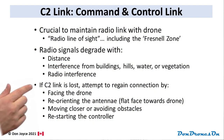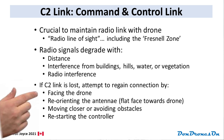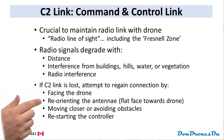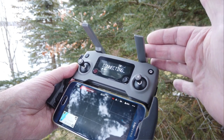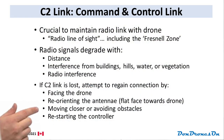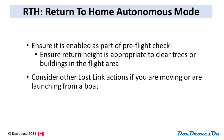If the C2 link is lost — and it happens to everyone eventually — attempt to regain connection by facing the drone, reorienting the antenna on the controller, remembering that the signal propagates out of the sides of the antenna, not the ends, and moving closer or moving somewhere to avoid obstacles. In the worst case, restart your controller. Many drones have an RTH or return-to-home autonomous mode, which kicks in if your C2 link is lost for a period of time. If your drone is equipped with that feature, ensure that it is enabled as part of your pre-flight check.